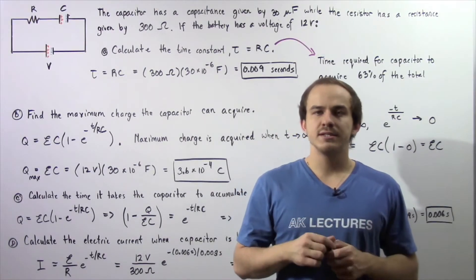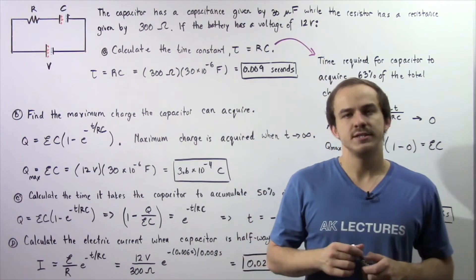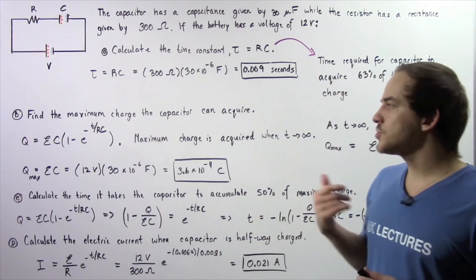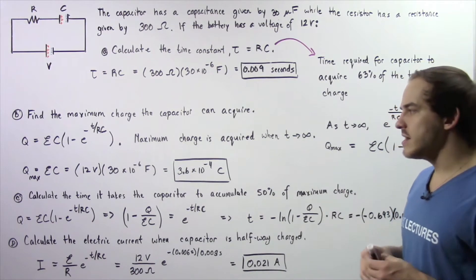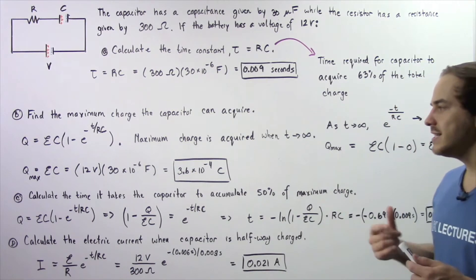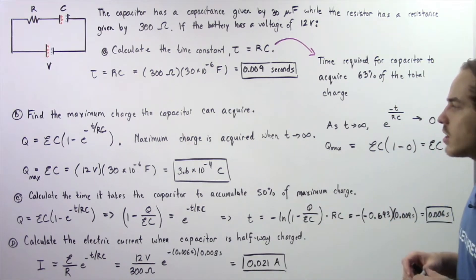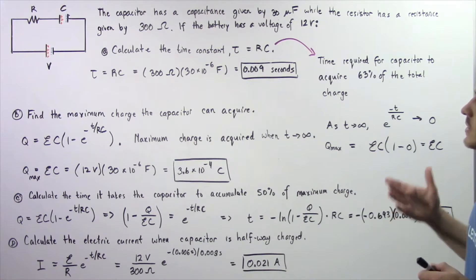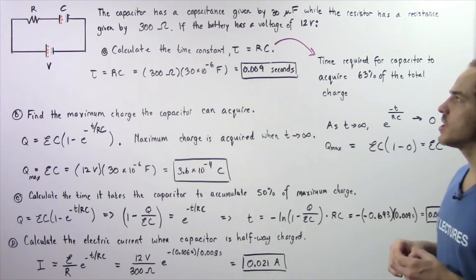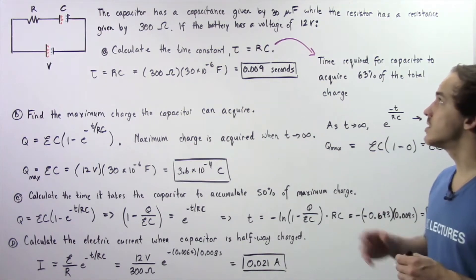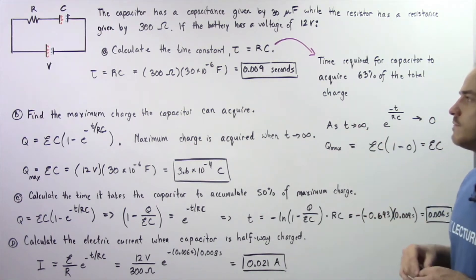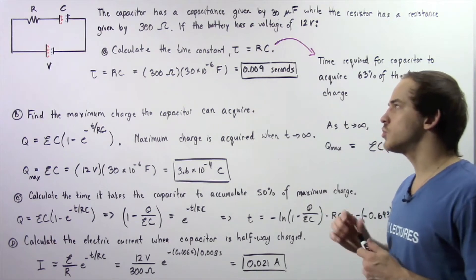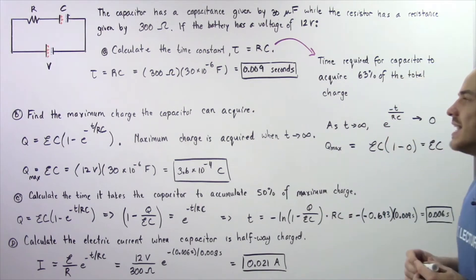In the previous lecture, we discussed RC circuits. Now let's look at an example that deals with an RC circuit. Let's suppose we have a capacitor with a capacitance of 30 microfarads and a resistor with a resistance of 300 ohms.